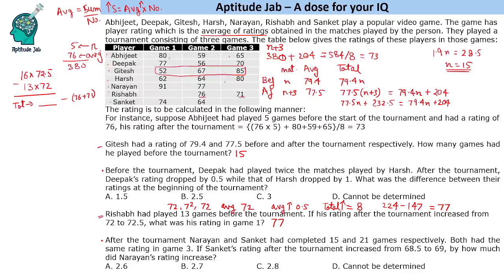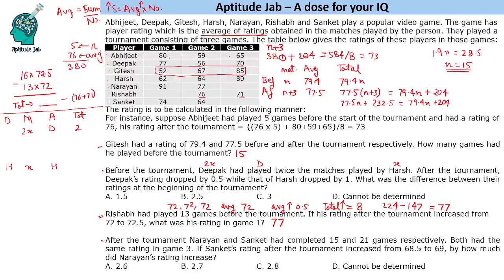Before the tournament, Deepak had played twice the matches played by Harsh. After the tournament, Deepak's rating dropped by 0.5 while Harsh's dropped by 1. What was the difference between their ratings at the beginning of the tournament? Suppose Harsh had played x matches, so Deepak played 2x matches. Let their averages before the tournament be d and h respectively. Deepak's total before is 2xd.